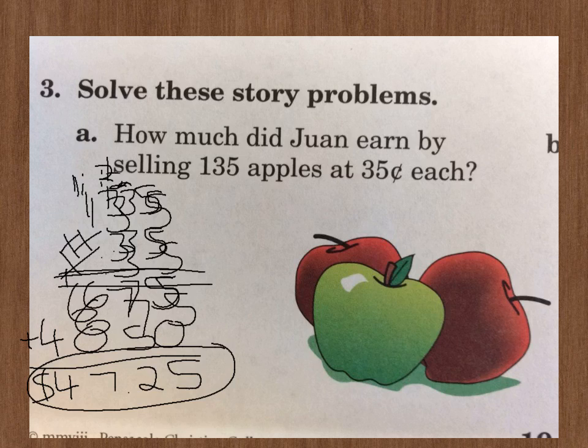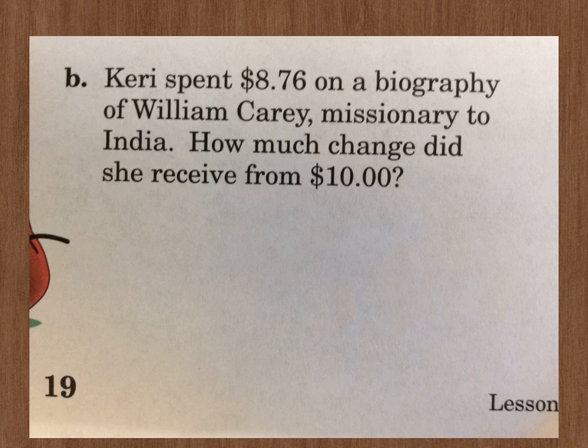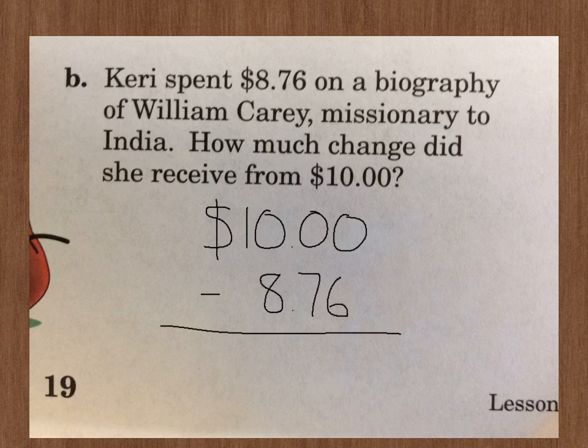Raise your hand if you like red apples better than green. And raise your hand if you like green apples better than red. Okay, let's do B. It says, Keri spent eight dollars seventy-six cents on a biography of William Carey, missionary to India. How much change did she receive from ten dollars? So we're going to subtract these two numbers. The ten dollars minus the eight dollars seventy-six cents.